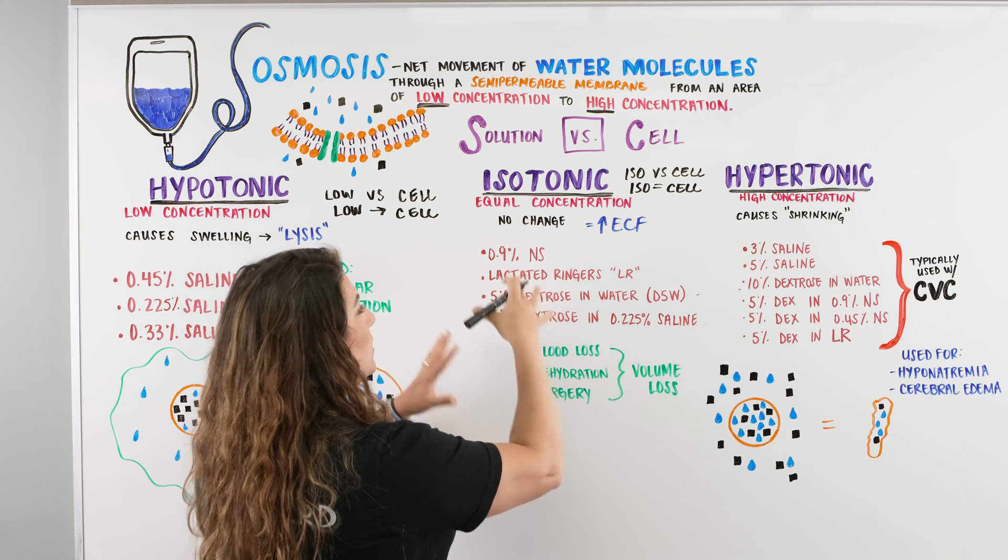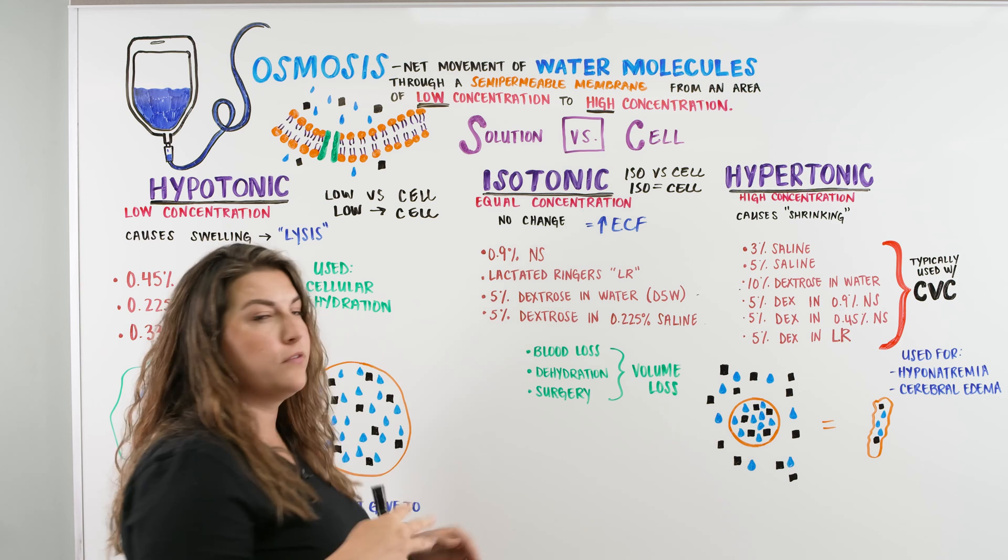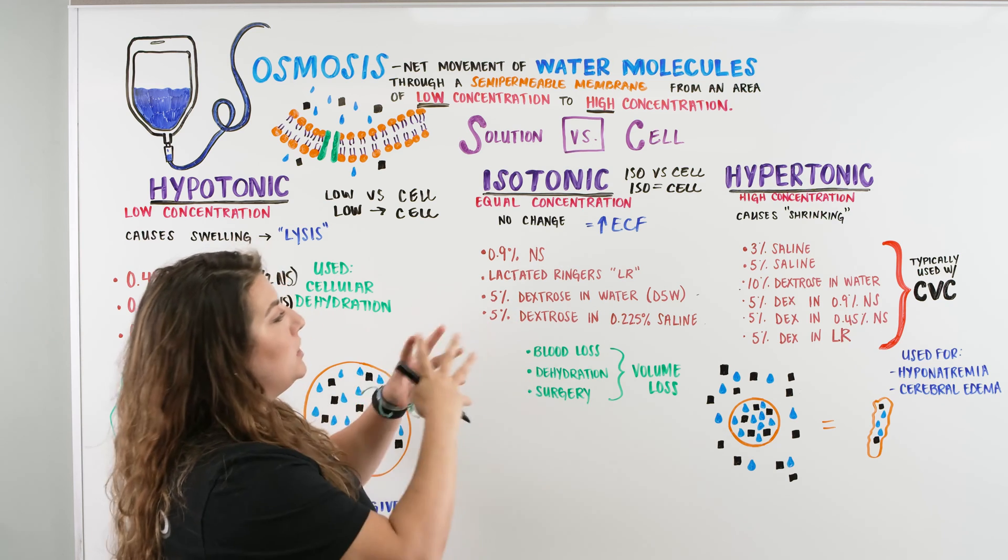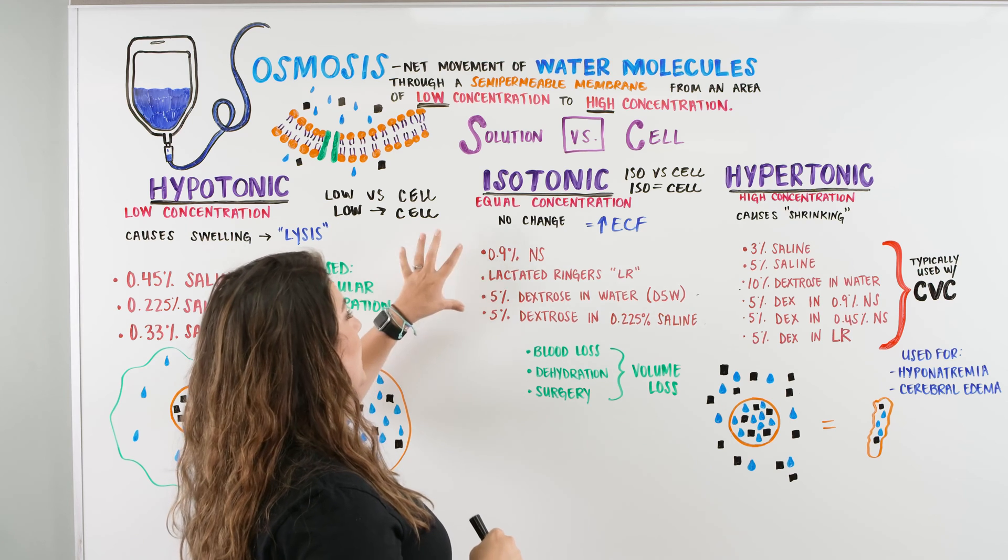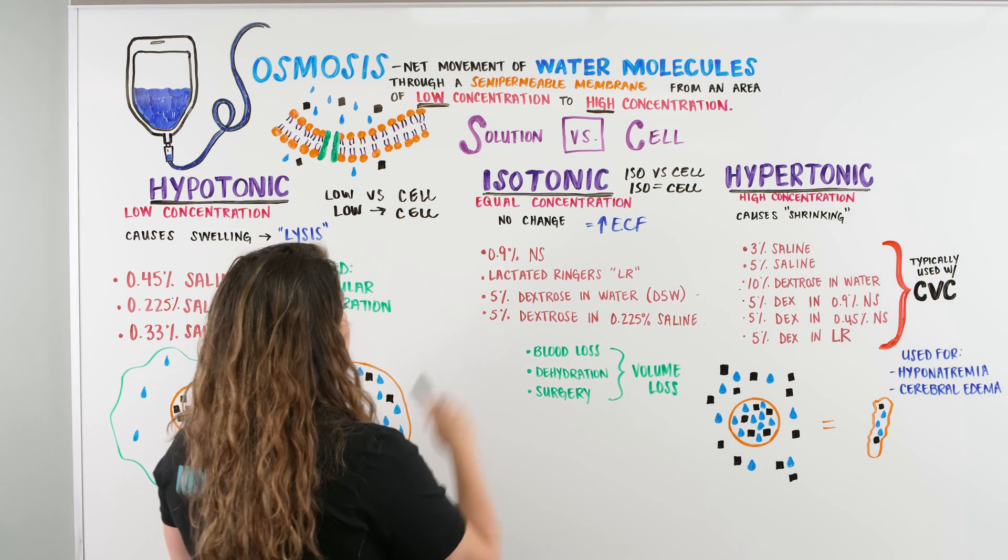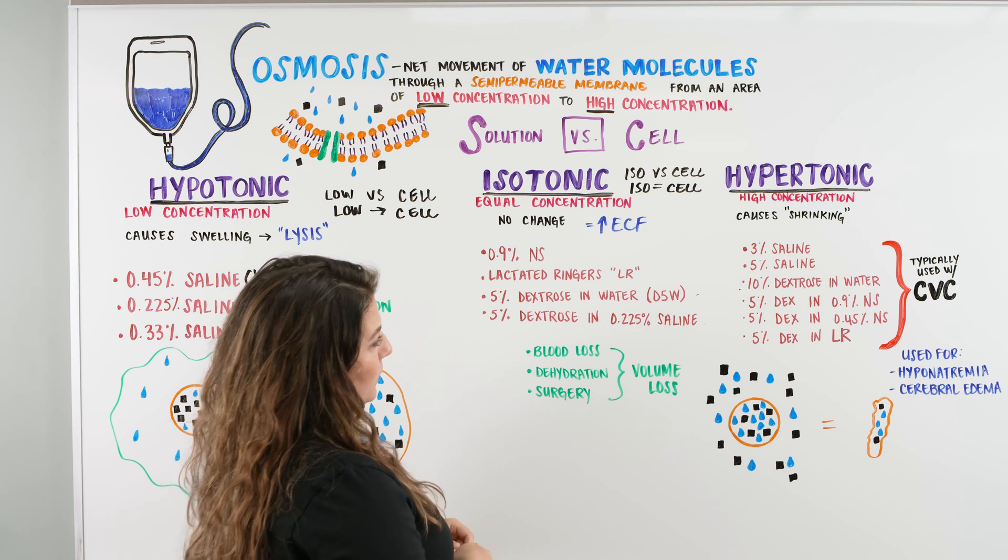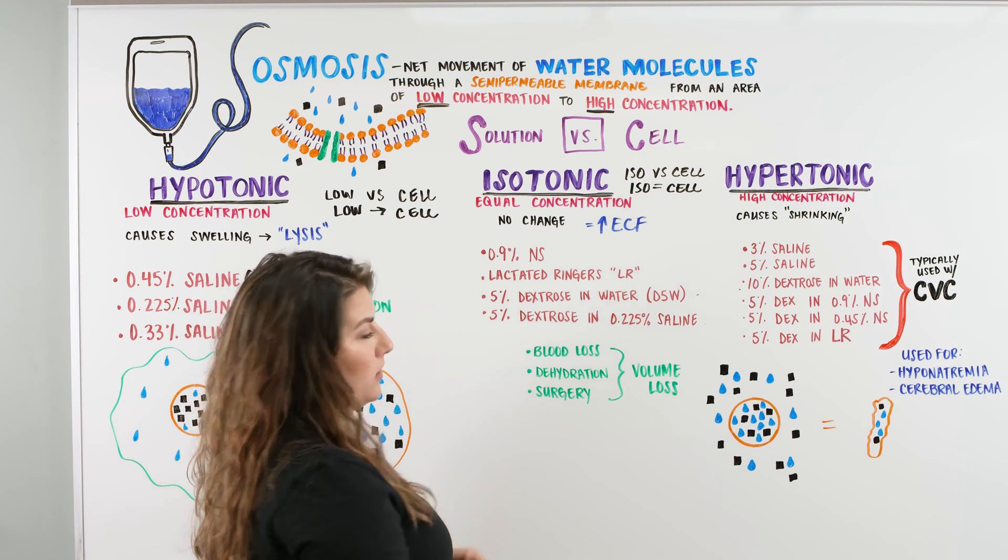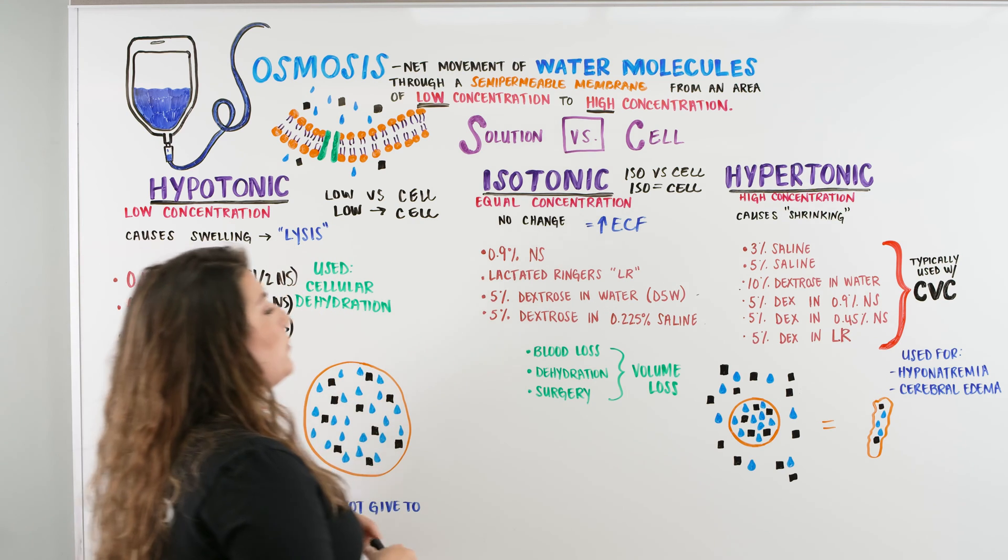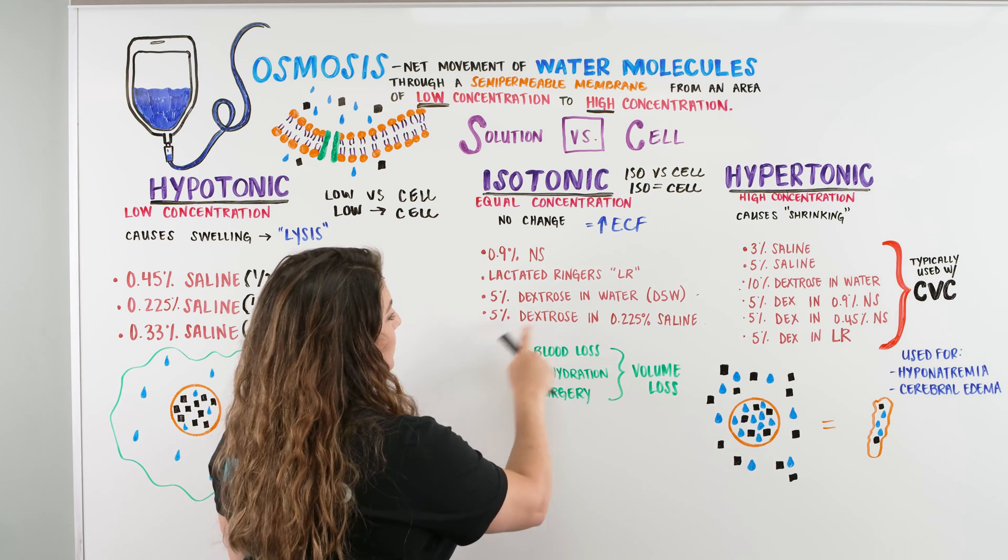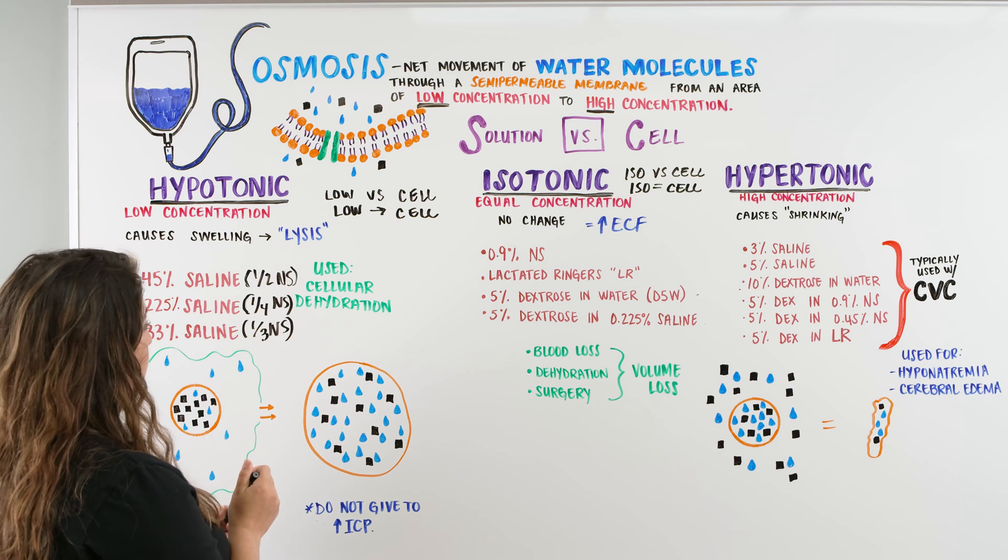This is just going to be giving us then, and our patients, increased extracellular fluid. So they're going to have more fluid available, but they're not going to be changing any type of shaping within the cells. So some of those fluids that we have available that we can give our patients is our 0.9% normal saline. We can give them our lactated ringers, commonly referred to as LR, our 5% dextrose in water, also known as D5W, and our 5% in 0.225% normal saline, or our 5% in one-fourth normal saline.